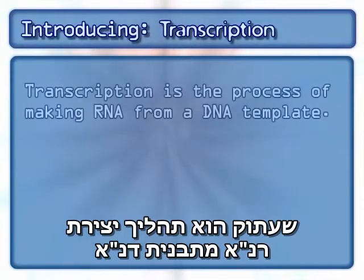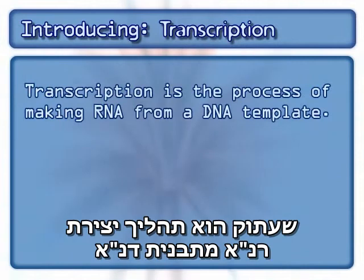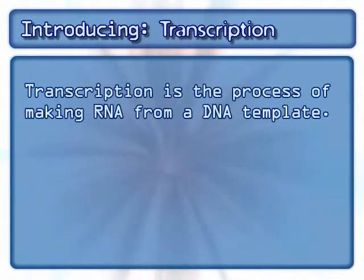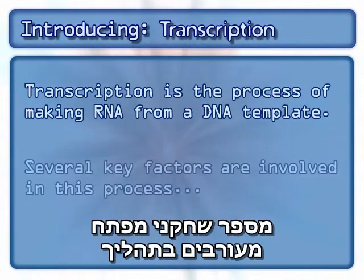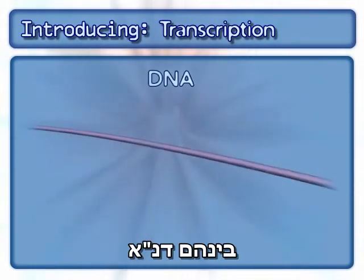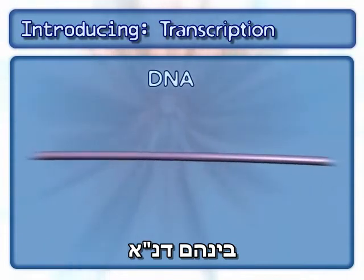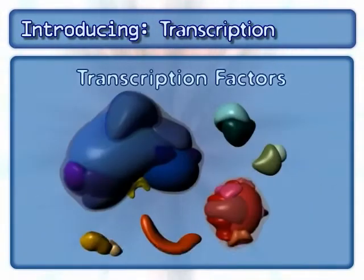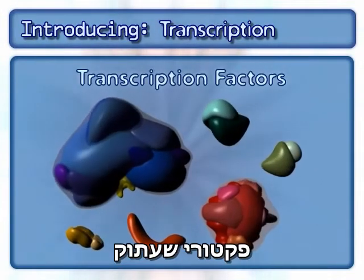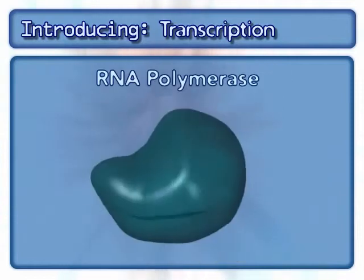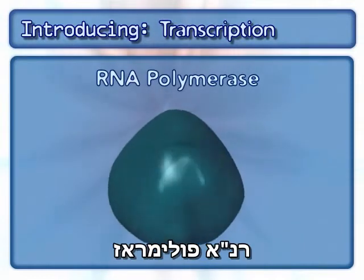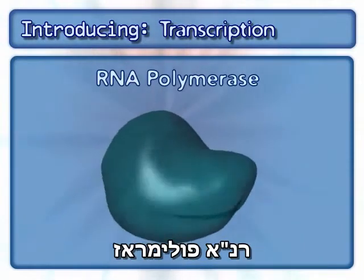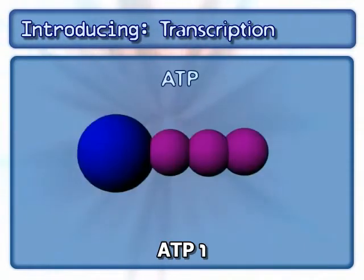Transcription is the process of making RNA from a DNA template. Several key factors are involved in this process, including DNA, transcription factors, RNA polymerase, and ATP.